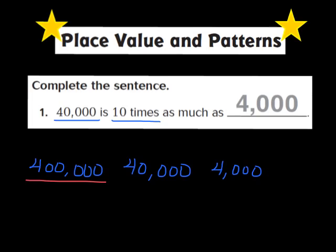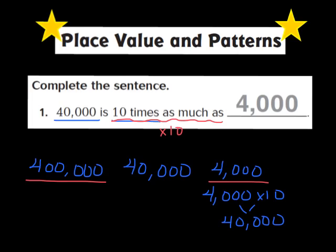These become my two answer choices: 400,000 or 4,000. The phrase '10 times as much as' means the same thing as multiplying by 10 or adding a zero. So I ask myself: which of those two numbers could I multiply by 10 to get to 40,000? I know I could take 4,000 and multiply it by 10, and that takes me to 40,000. So 4,000 is the right choice. Once again, 40,000 is 10 times as much as 4,000 — it has one more zero than 4,000 does.